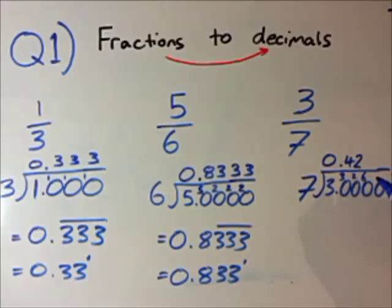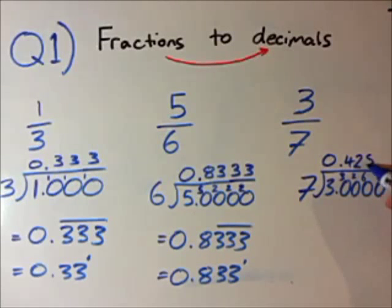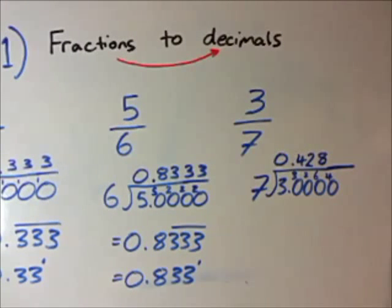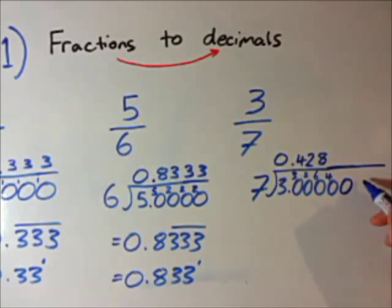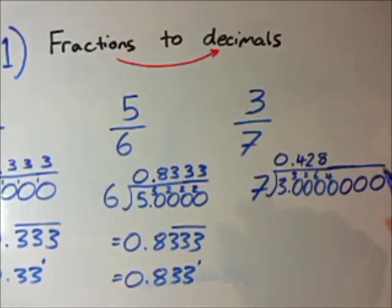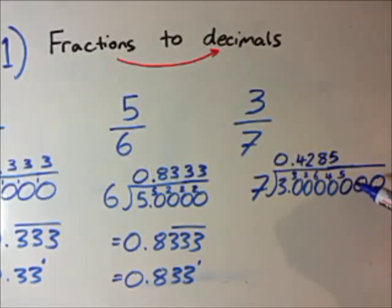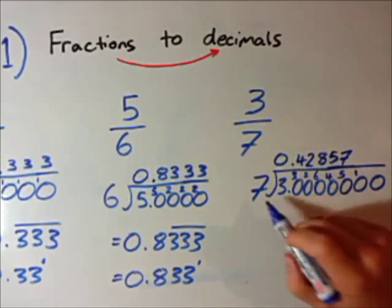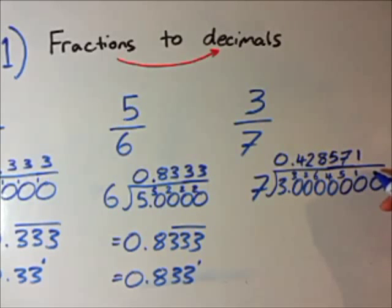How many times does 7 go into 60? 7 times 8 is 56, so it's going to go 8 times with 4 remainder. I need a few more zeros here — I've realised this is going to be a longer recurring than I thought. How many times does 7 go into 40? 7 fives are 35, so that's 5 with 5 remainder. How many times does 7 go into 50? 7 times 7 is 49, so that's 7 with 1 remainder. 7 into 10 goes once with a 3 remainder.